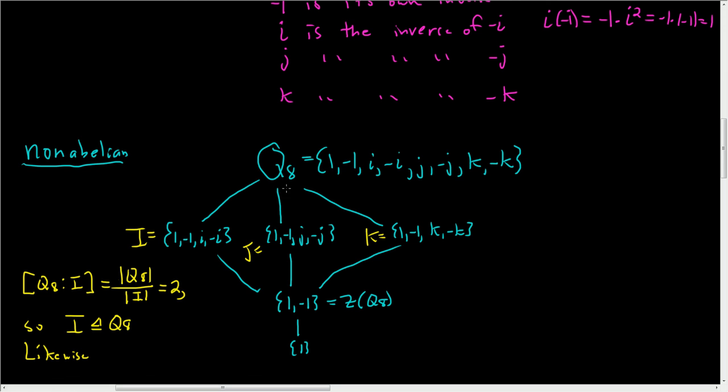Likewise, you see that 8 divided by 4 is 2. This is 8 and this is 4. So likewise, K and J are normal in Q8. So we've established that I, J, and K are normal. What about the center? Well, the center is always a normal subgroup. So, in fact, we do have a group where every subgroup is normal.